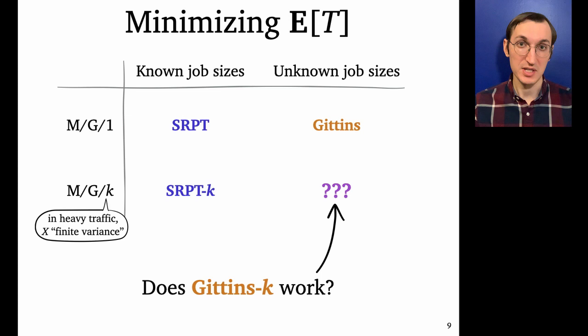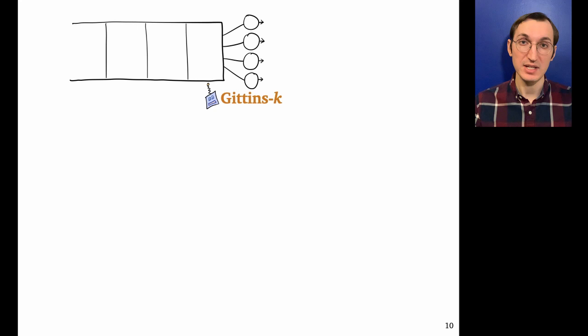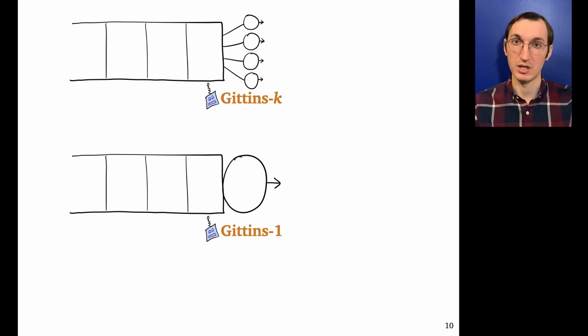Well, the state of the art techniques for proving such a result look like this. We'd have to compare the k server Gittins-k policy to a single server version, which is Gittins in the M/G/1. We're going to call that Gittins-1. So we're trying to compare Gittins-k to Gittins-1. And remember our assumption that the k servers each have speed 1 over k. So that means that both of these systems actually have total server speed 1.